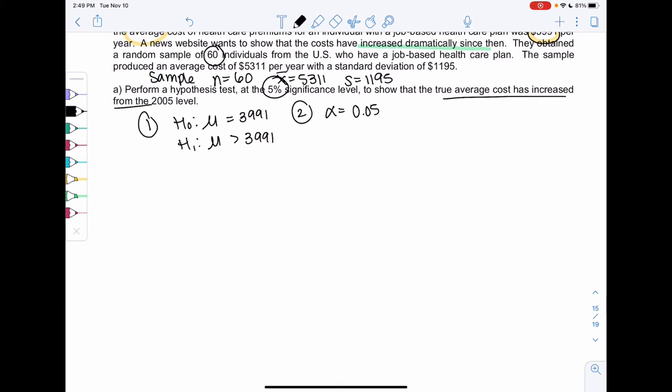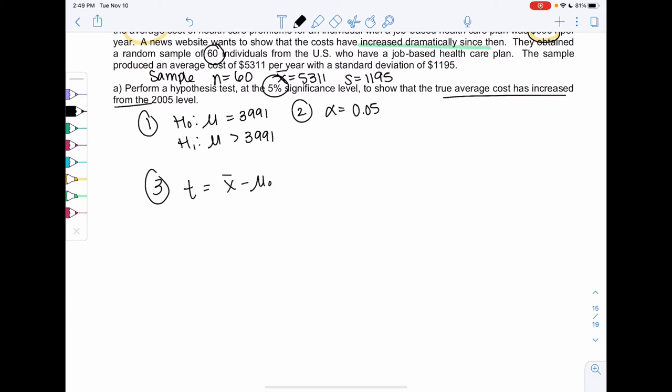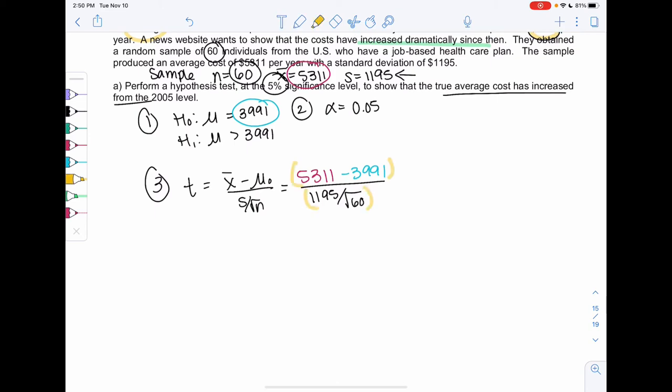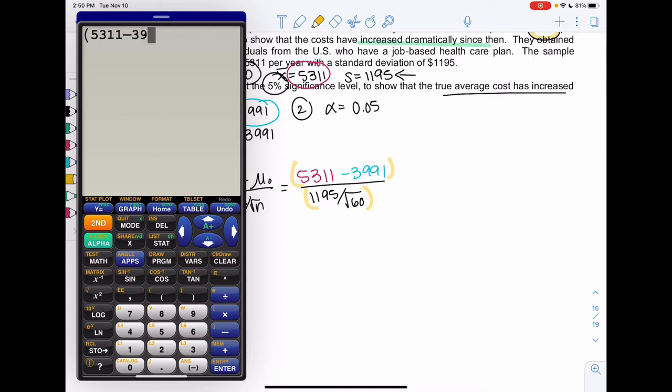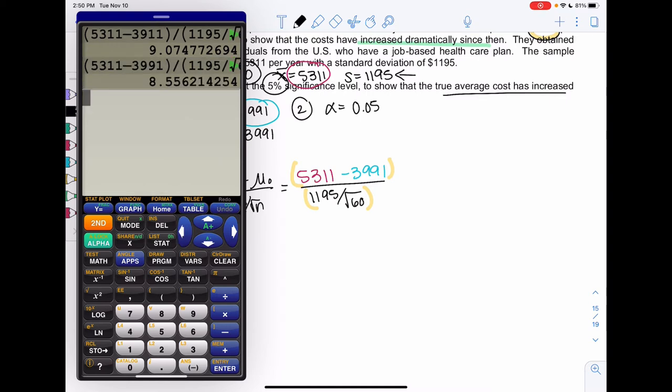Let's find the test statistic. We get x-bar minus mu over S over root N. X bar is 5,311 minus the claim, 3,991, all over S, 1195, over square root of 60. We'll add parentheses and use our calculator. Parentheses around the top, divide parentheses around the bottom. I get a T-score of 8.556.